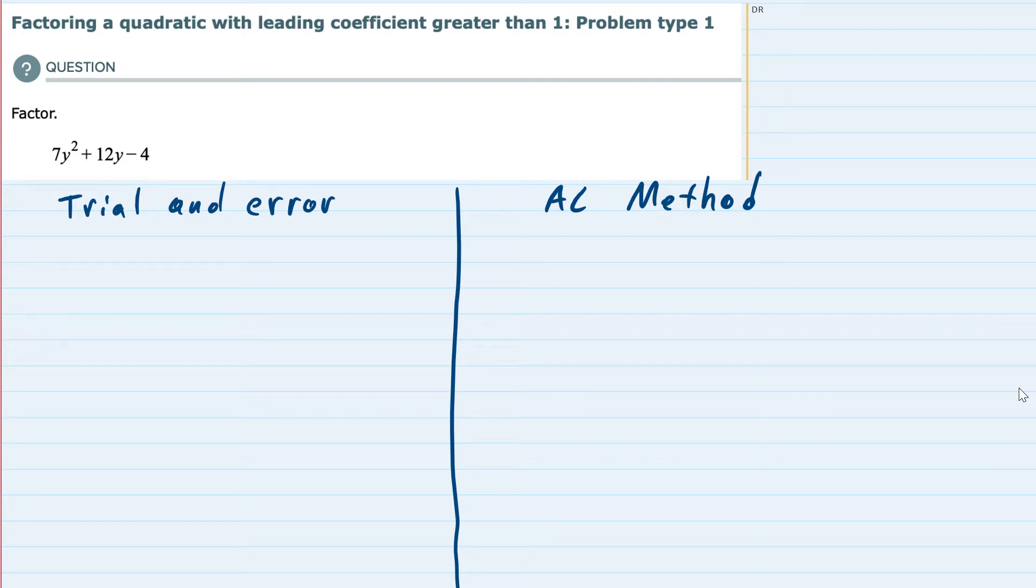I'm going to start with trial and error. First off, just rewriting the problem, I've got 7y² + 12y - 4. Trial and error means that I go ahead and put my two sets of parentheses in, and I start trying things.